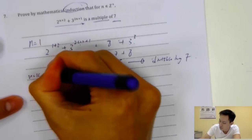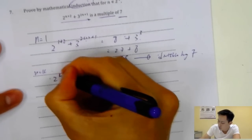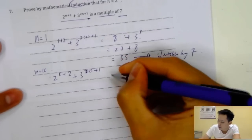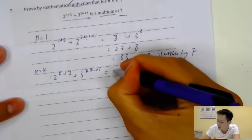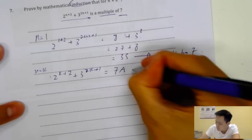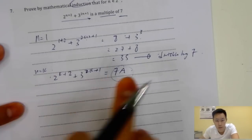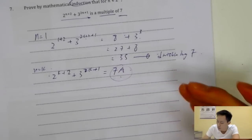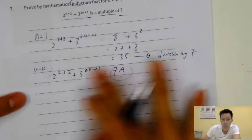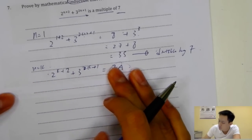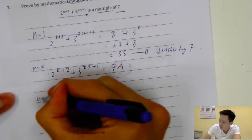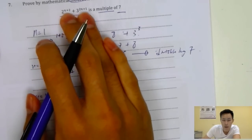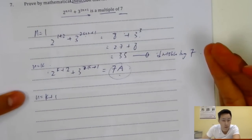Then we assume N equals K: that 2^(2K+1) plus 3^(K+2) is divisible by seven, meaning it equals 7A where A can be any integer. We assume this holds for K, and then we want to show that substituting K plus one into the equation also gives a multiple of seven.